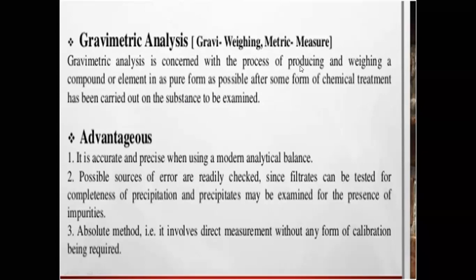The basic steps in gravimetric analysis are: precipitate the analyte, purify it by applying various purification processes, convert it into an appropriate form by heating, then weigh the substance — and from the weight we can find out its concentration. Regarding advantages over volumetric analysis: gravimetry is the most accurate and precise method. With the help of a modern analytical balance, we can find out the concentration of the analyte using only one apparatus.